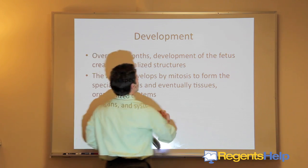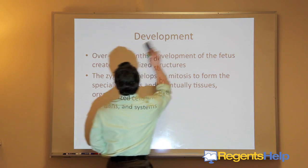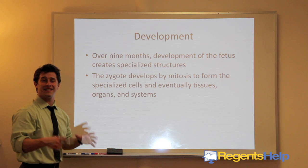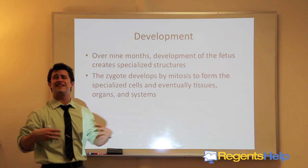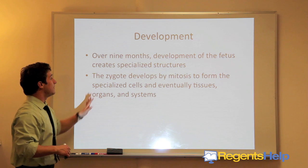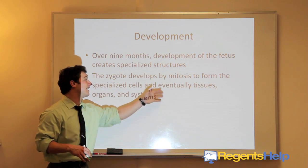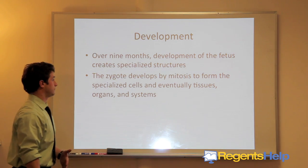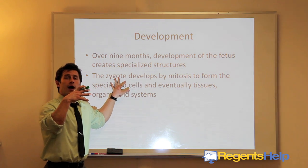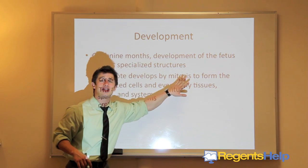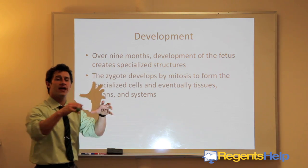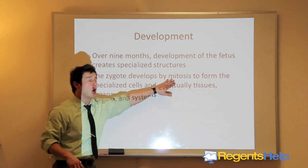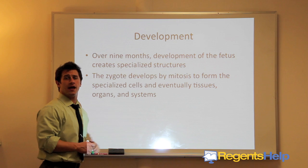Over nine months, the fetus develops within the uterine lining, creating specialized structures. What starts as one single cell develops into a fetus with skin, nails, and bones. The zygote develops by mitosis to form specialized cells and eventually the tissues, organs, and systems that make up the multicellular organism. After the sperm and egg meet in the fallopian tubes, the zygote develops by mitosis — mitosis creates all those extra cells. Remember, meiosis makes sex cells; mitosis is the chief process that helps the zygote develop.